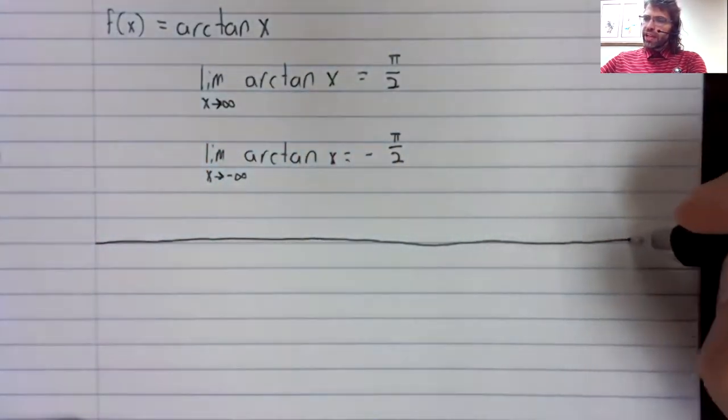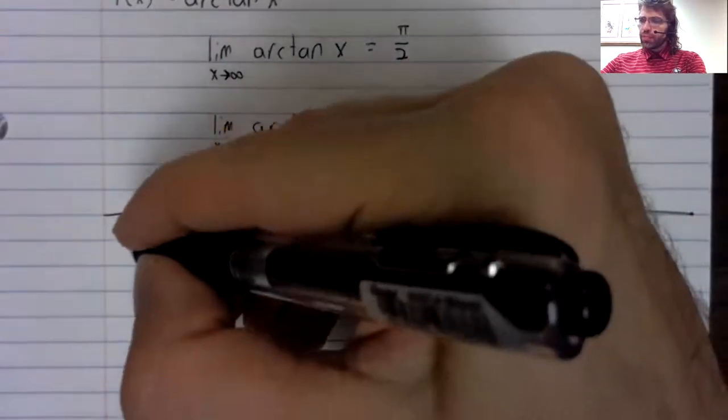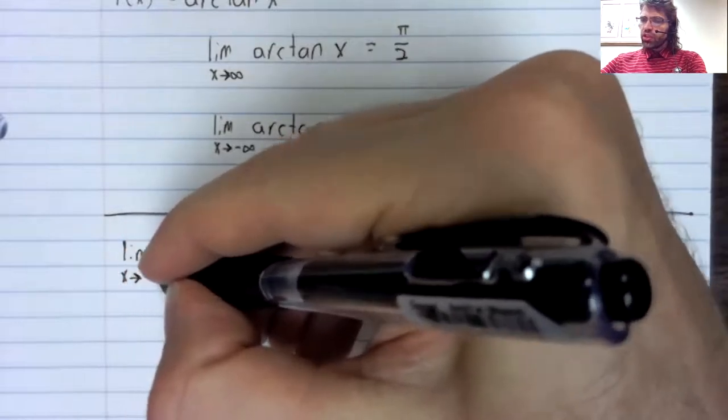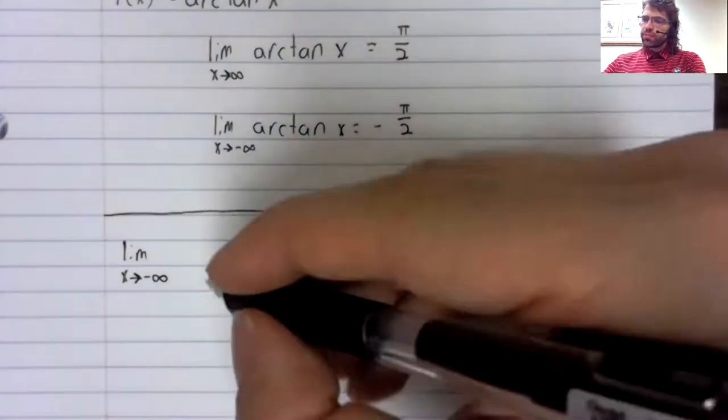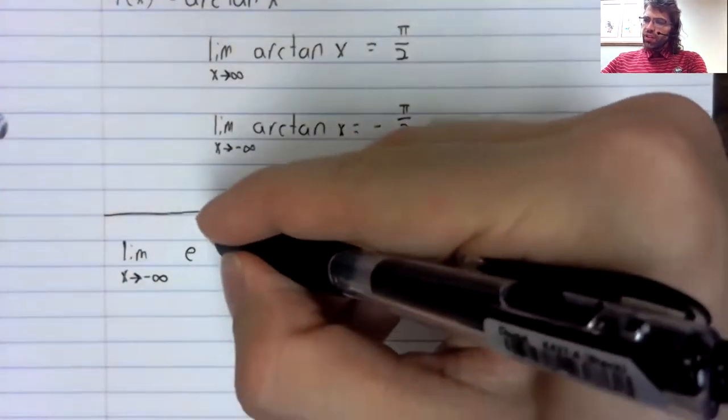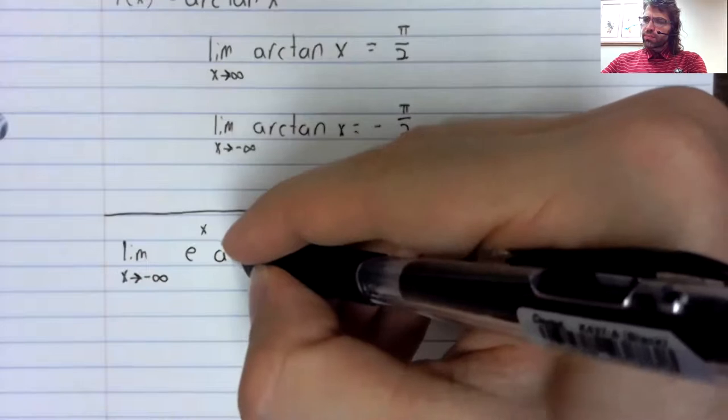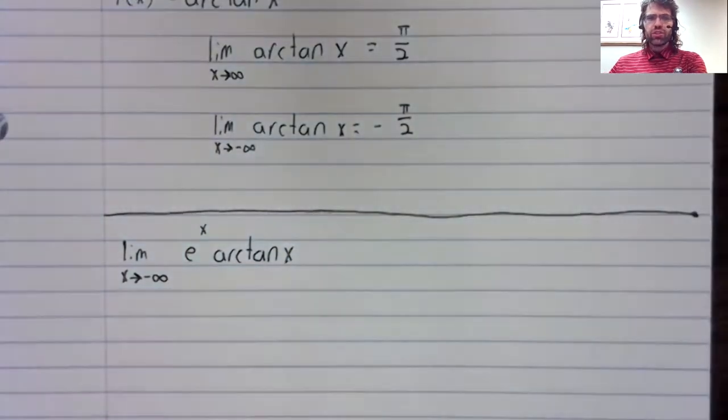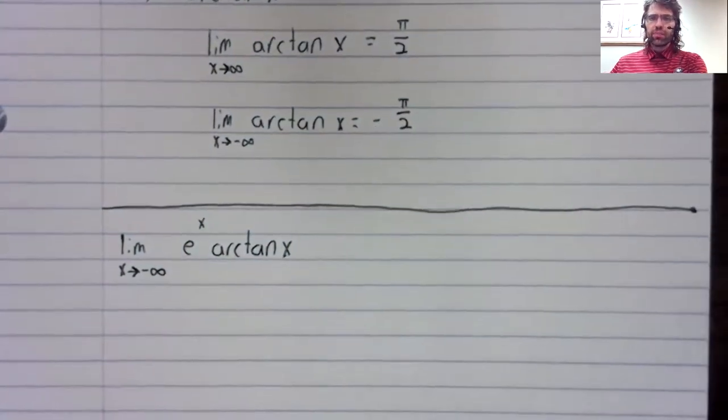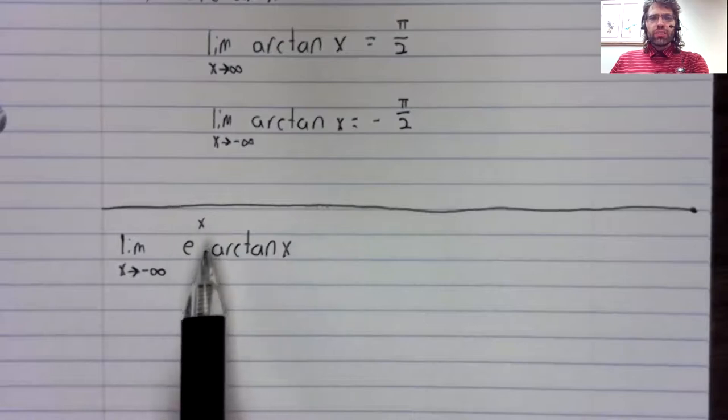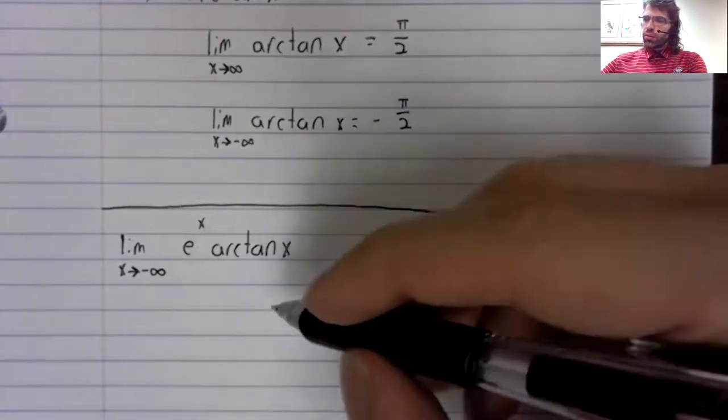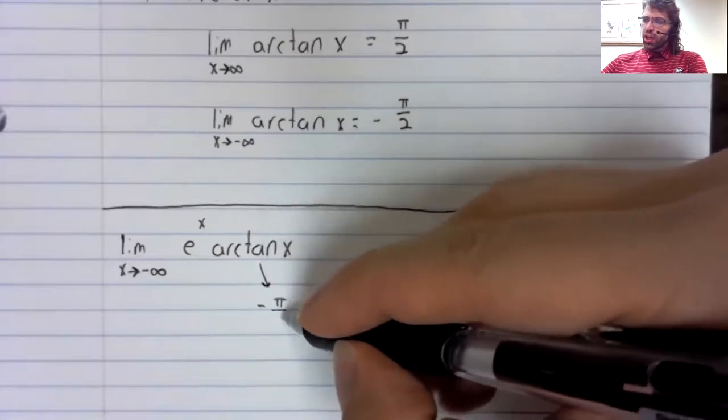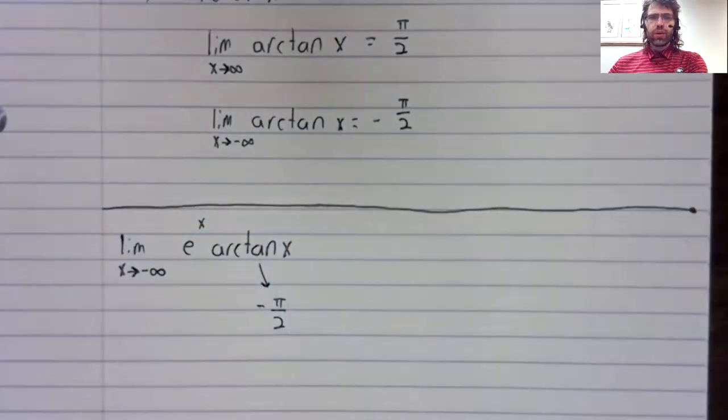For example, the limit as x approaches negative infinity of e to the x times the arc tangent of x. We've got a limit of a product here. We've already seen what the arc tangent approaches.